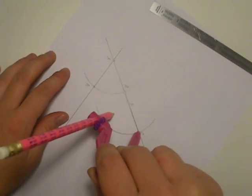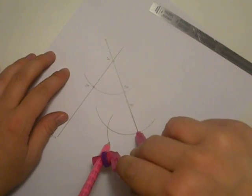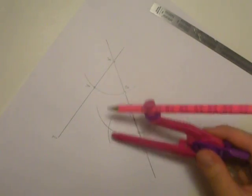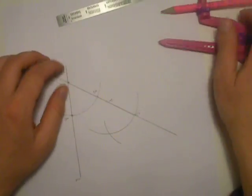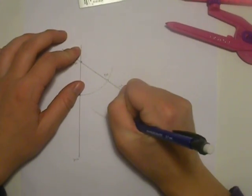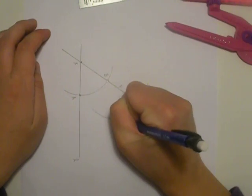We now need to make a new arc, just big enough so it crosses through this old arc through C. This new point, I'm going to label D.